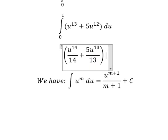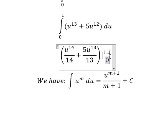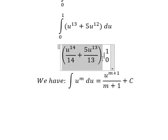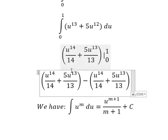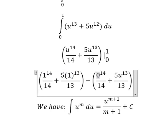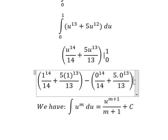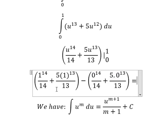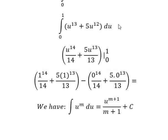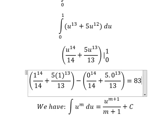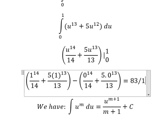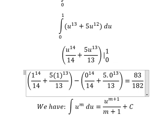We put the bounds from 0 to 1. Now we substitute the bounds and calculate this. We get 83 over 182, and this is the final answer.